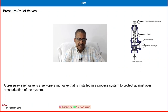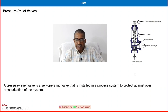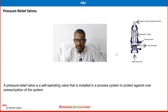A pressure relief valve is a self-operating valve that is installed in a process system to protect against overpressurization of the system. It is spring-loaded — the spring is here and the upstream pressure acts on one side, while the downstream pressure acts against the spring on the opposite side.